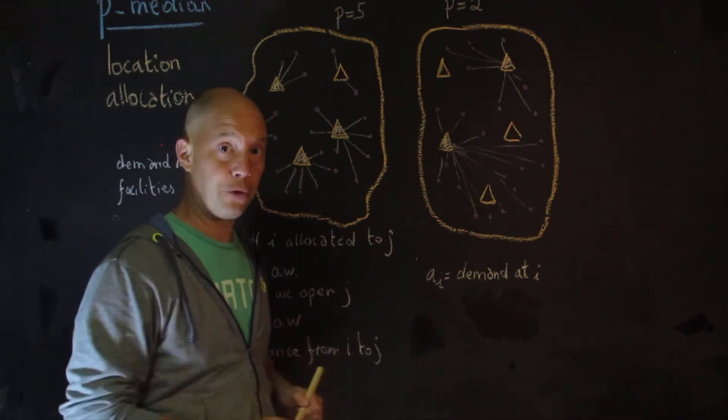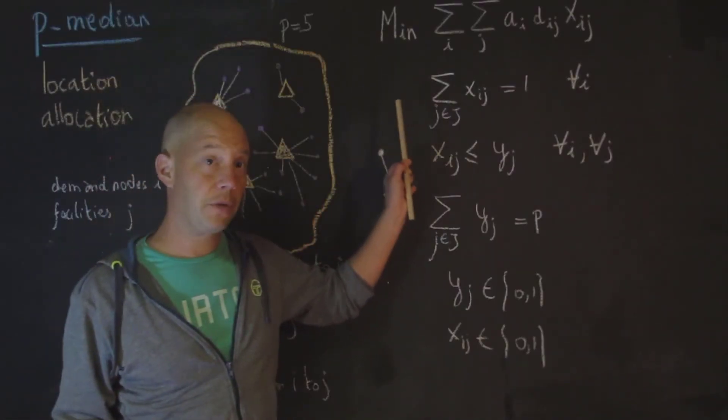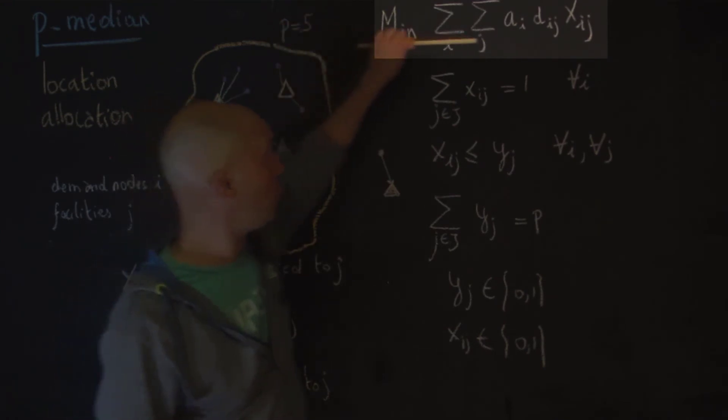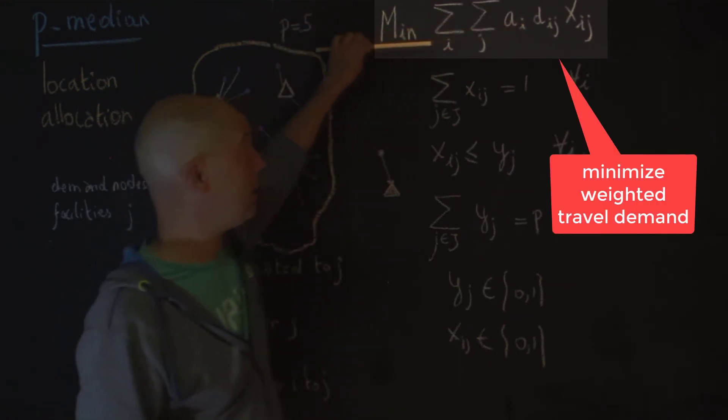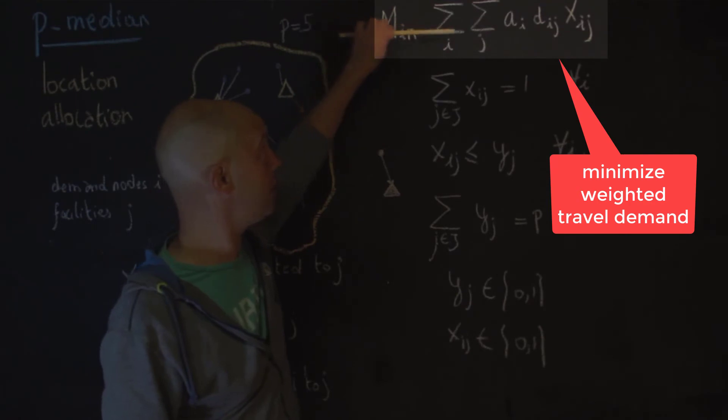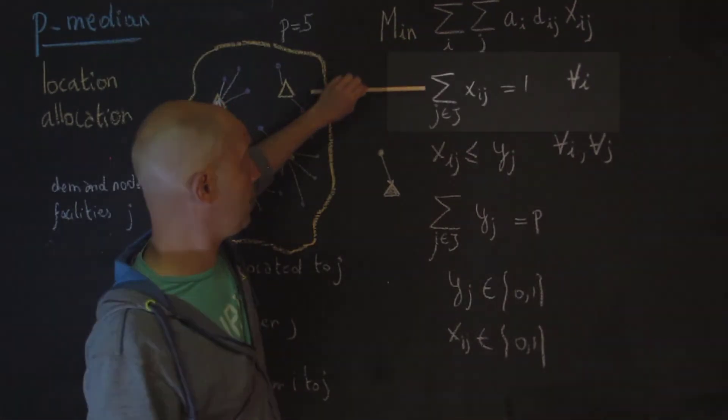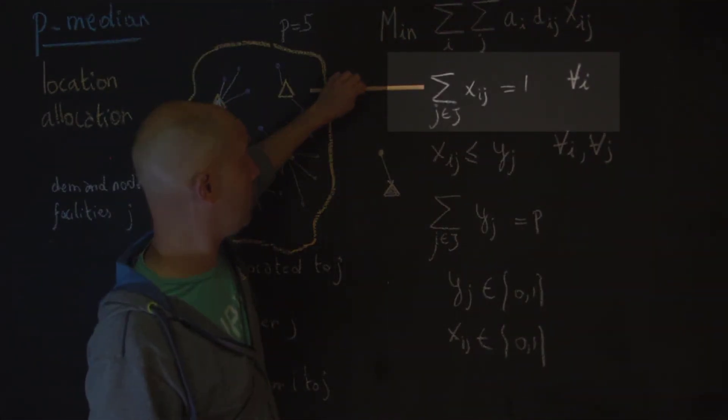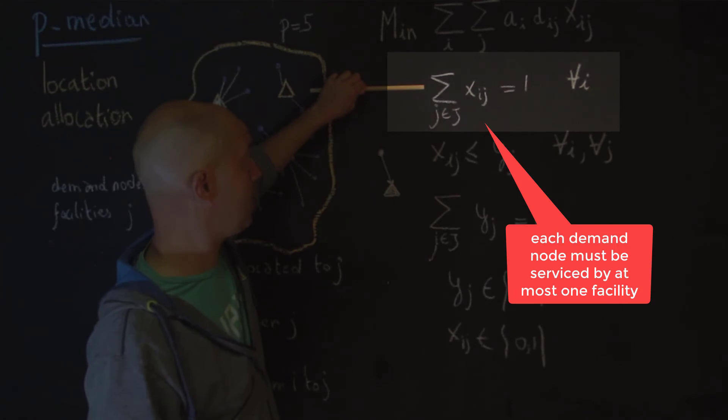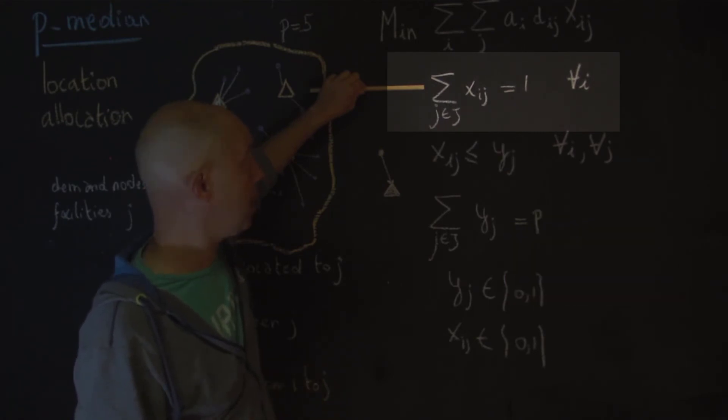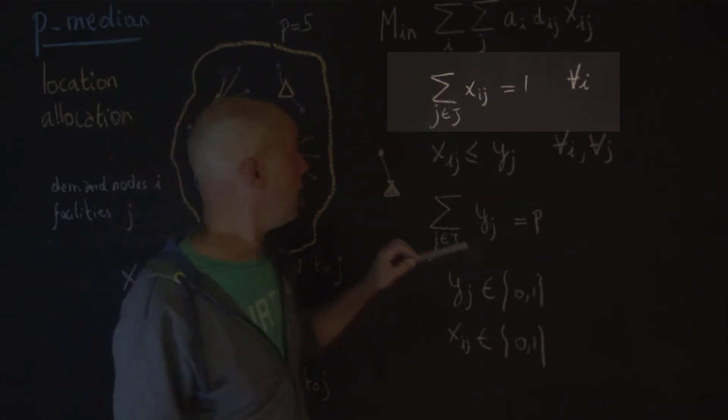The formulation for the p median is as follows. We're trying to minimize the weighted demand that is assigned to various facilities. And we sum this up over the demand and also over the facilities. That's why you have two summation signs. The next equation here is the first constraint, and it stipulates that each demand node must be assigned to one facility. At most one facility and at least one facility. So that's why it's equal to one. So no single demand node can be left unassigned.